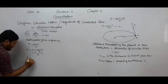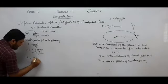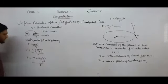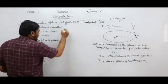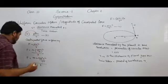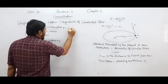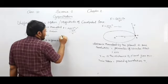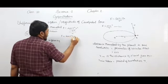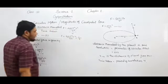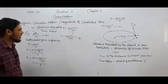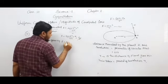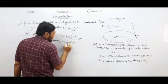Substituting, F becomes M times (2πR/T) squared, divided by R. Solving: F equals M times 4π²R² over T², divided by R. This simplifies to F equal to 4Mπ²R divided by T squared, after one R cancels from numerator and denominator.